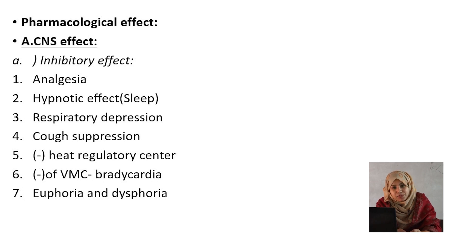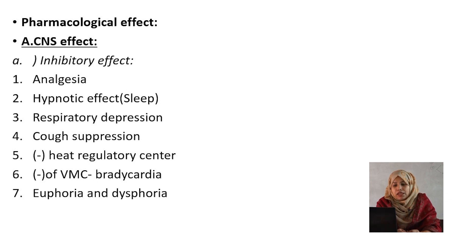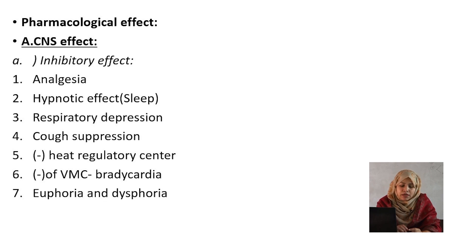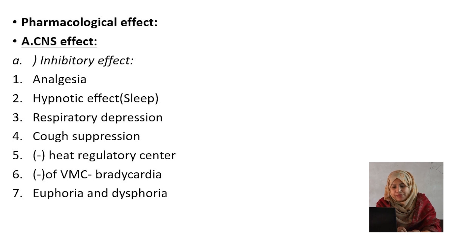Number 3 is respiratory depression. Morphine causes cardiorespiratory depression. Number 4 is cough suppression. For cough, we use medicines which contain codeine, hydrocodone — this type of morphine derivative.